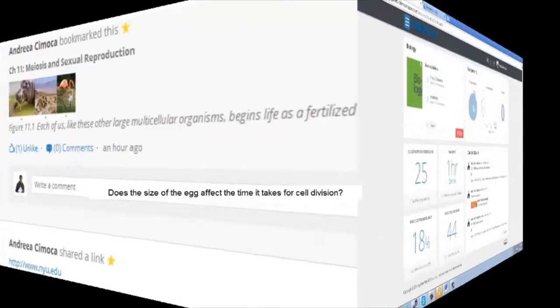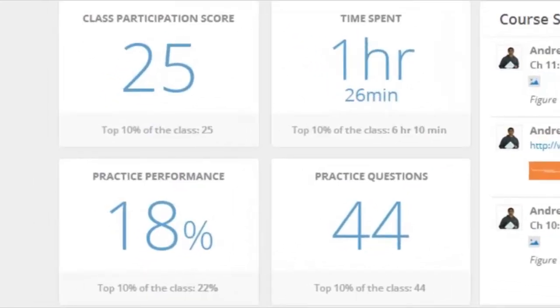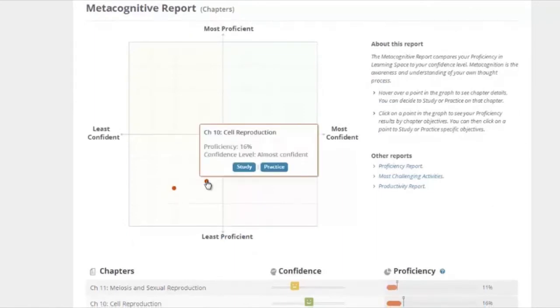Now let's take a look at the Reports section. In the Reports section, instructors and students alike have a wealth of visual reports that provide insights into appropriate next steps. Students can quickly glean the topics they believe they know but in fact need more practice on. For example, metacognitive reports show how students are performing versus how they think they are performing, and they can move straight to the materials that will allow them to practice or study up on those concepts.